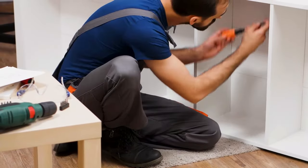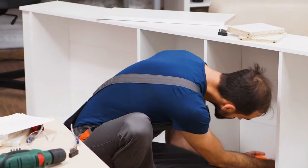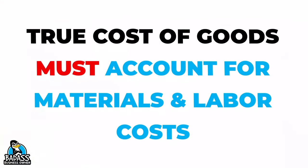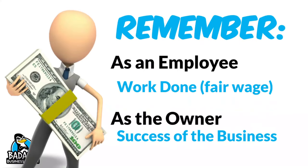The next big mistake small business owners make when pricing their products or services is they fail to figure in their employee time into their cost of goods. For many of you, you are the laborer in your business, and in order to get a true cost of goods, you need to account not only for the materials you use but also for any labor hours that are part of creating the product or service. You wear two hats in your business: one is the laborer, and one is the business owner.